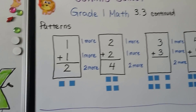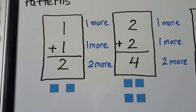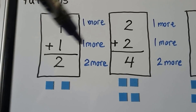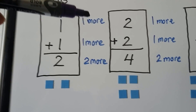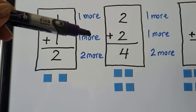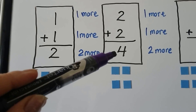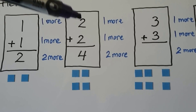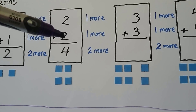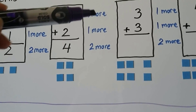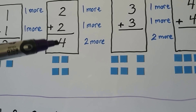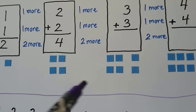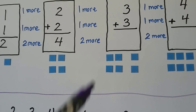Now there are also patterns when we add doubles. When we do 1 plus 1, it equals 2. If we add one more to each addend and make them both 2s, we're adding one more and one more — which is 2 more. So if this sum is 2, then this sum must be 2 more: it's 4. We add 2 and 2. If we add one more to each 2 to make them 3s, we're adding one more and one more — that's 2 more in all. The sum will be 2 more than the previous one: 4 and 2 more is 6.